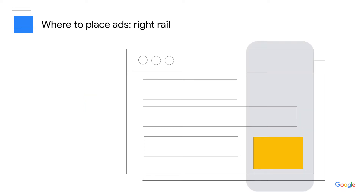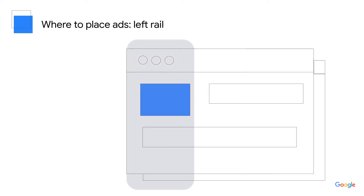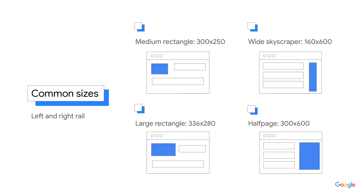Now that you know above and below the fold, where exactly should you place ads? There are a few key positions. First are what we call the rails — the spaces on the left and right sides of your page. Here's the right rail position, and here's the left rail position. When you start placing ads, it's important to use popular ad sizes to make sure you're capturing the most demand from advertisers. Using ad sizes that advertisers prefer can help make your ad inventory more desirable. The most popular sizes for ad units on the right or left rail are typically square or vertical ad sizes.